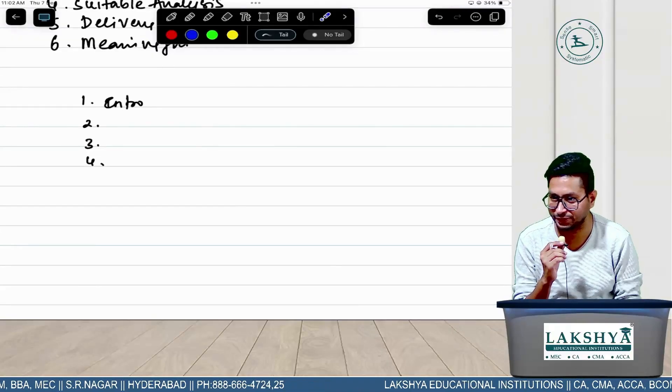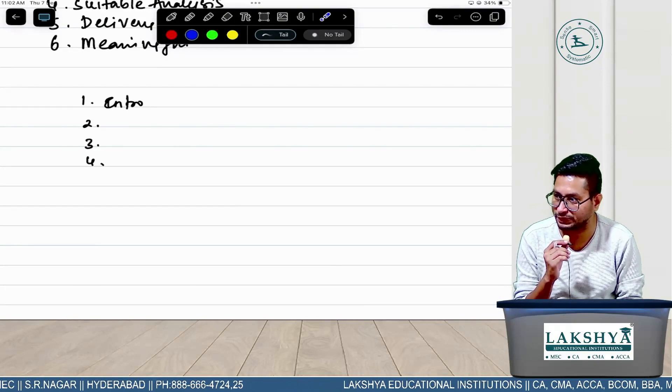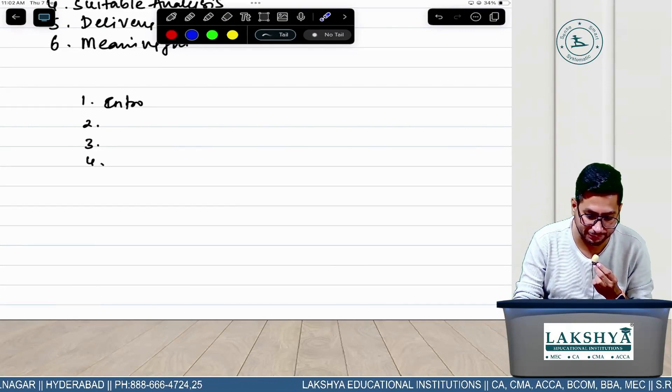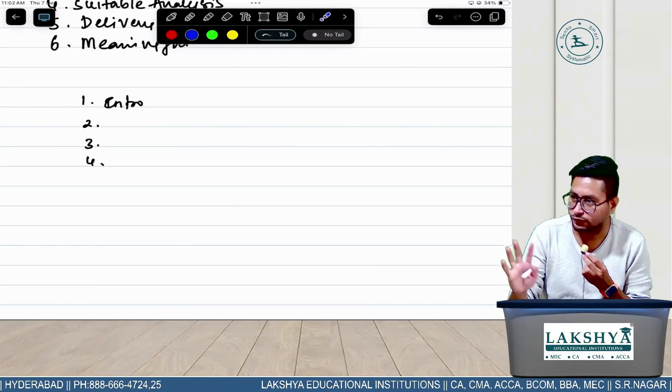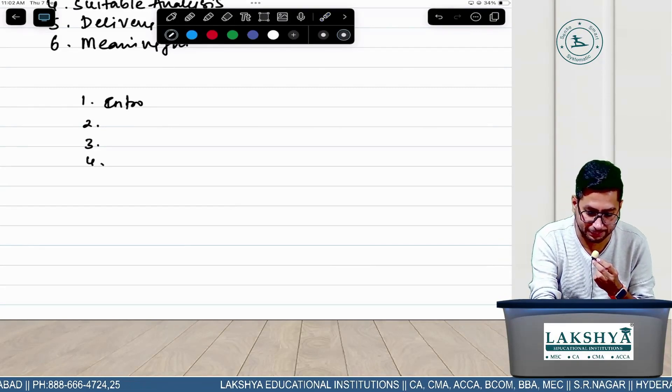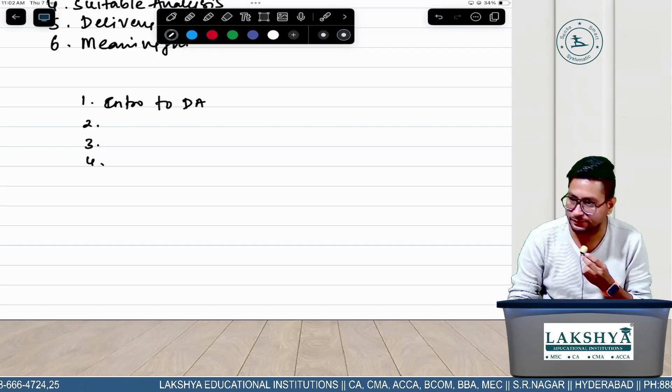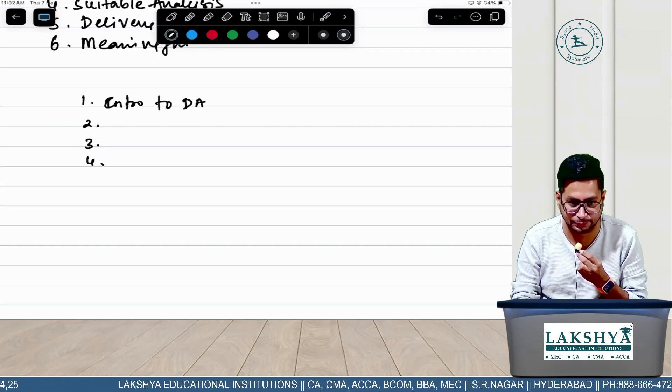I hope you know how many marks this is for - 20 marks. And FM is for how many marks? For these 20 marks we have four chapters. Chapter 1 is Introduction to Data Analytics or Data Science. Chapter 2 is Data Processing.